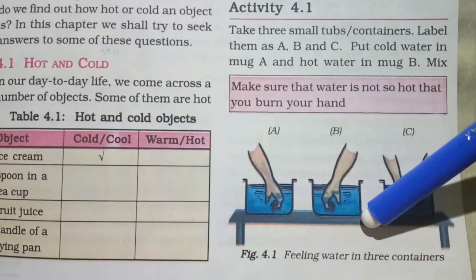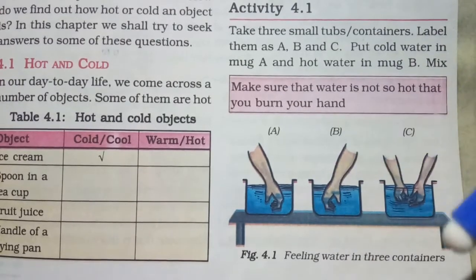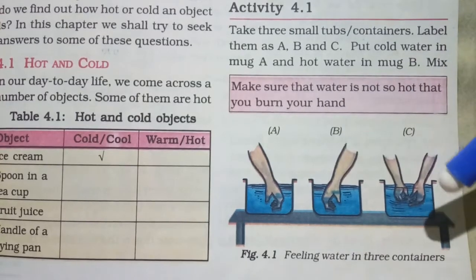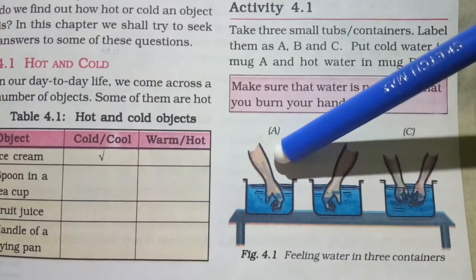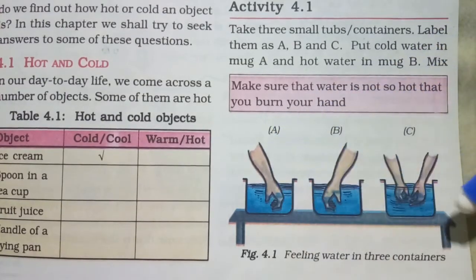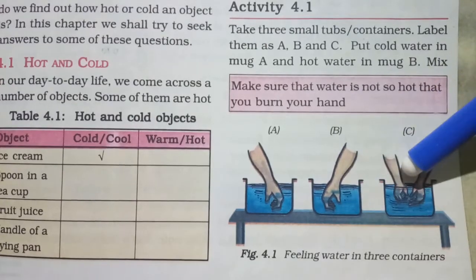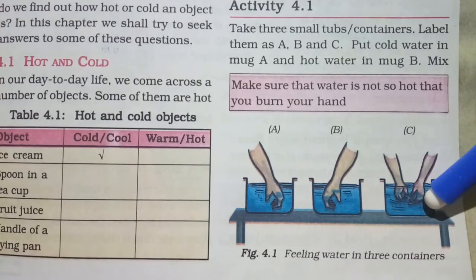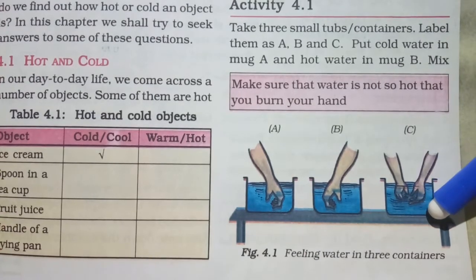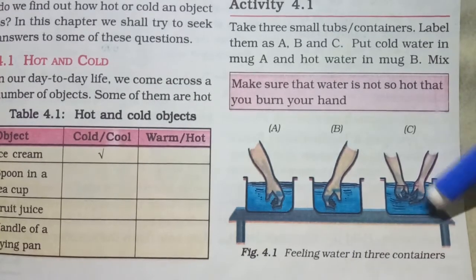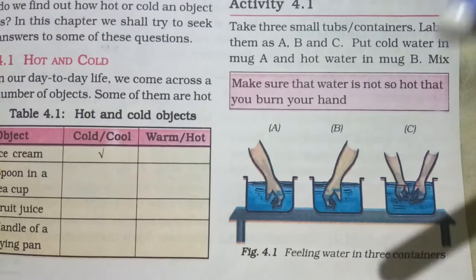Keep your hands in containers A and B for 2 to 3 minutes. After that, take both hands and dip them in container C. What happens is that the left hand, which was in cold water, now feels the water in container C is warm. And the right hand, which was in hot water, feels the water in container C is cold. This means we cannot say whether the water in container C is cold or hot — it is completely confusing. So we need some device or equipment to measure exactly how cold or hot an object is.